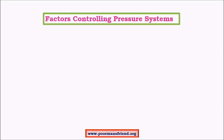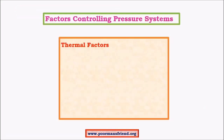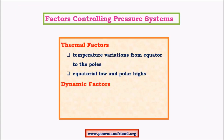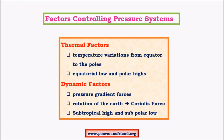What are the factors that control pressure systems? There are two factors: one is thermal factors and the other is dynamic factors. Thermal factors are nothing but variation in temperature. The difference in temperature between the equator and poles gives rise to certain pressure belts. These pressure belts — the equatorial low, which is formed due to greater temperatures at the equator, and the polar highs — are formed mainly due to very cold climates at the south and north poles.